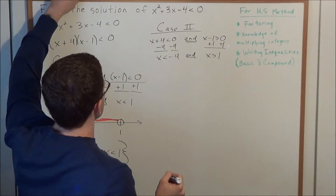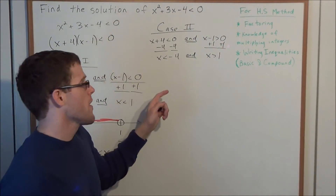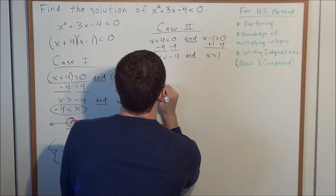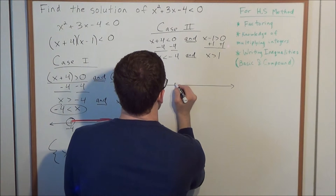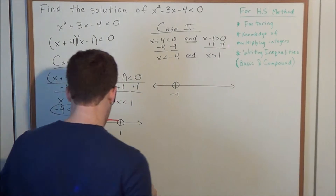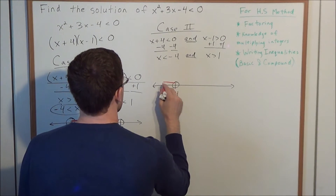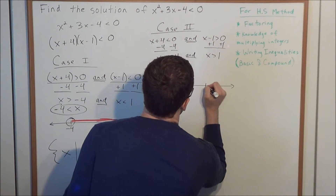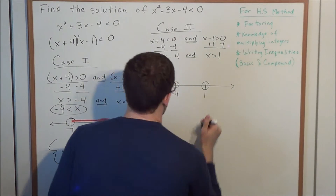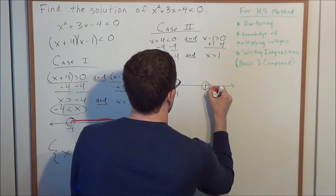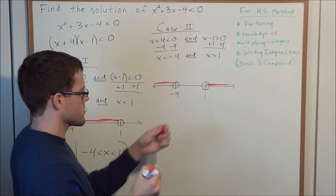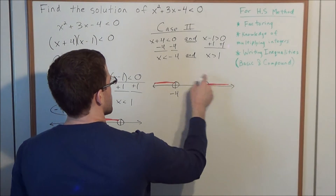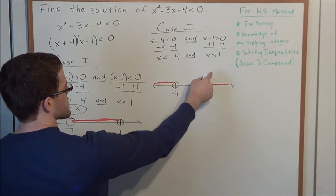But look at what happens when we try to graph this. We need x to be less than negative 4 and x to be greater than 1 at the same time. x is less than negative 4 gives all the values to the left of negative 4, while x is greater than positive 1 gives all values to the right of positive 1. There is no common value of x that satisfies both of these inequalities simultaneously.